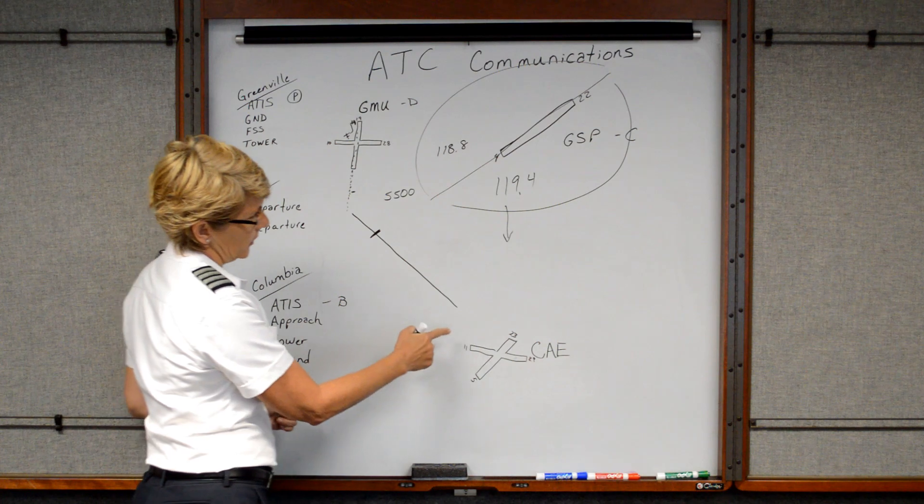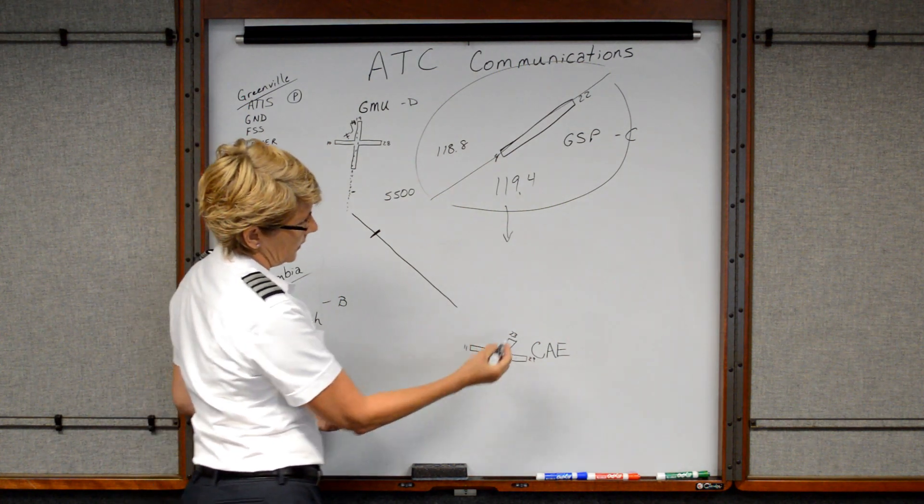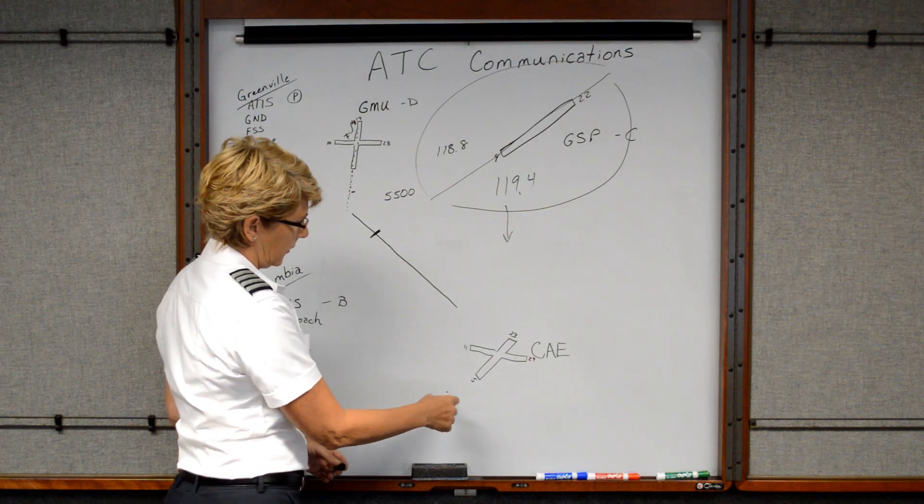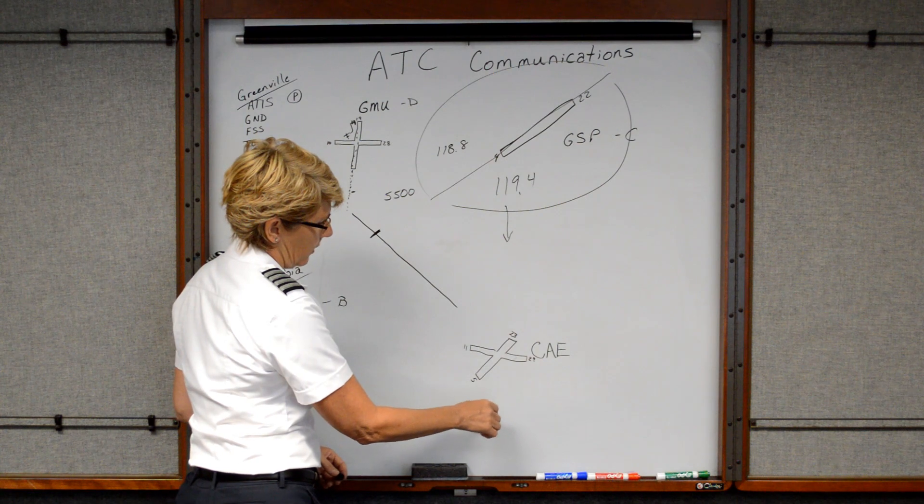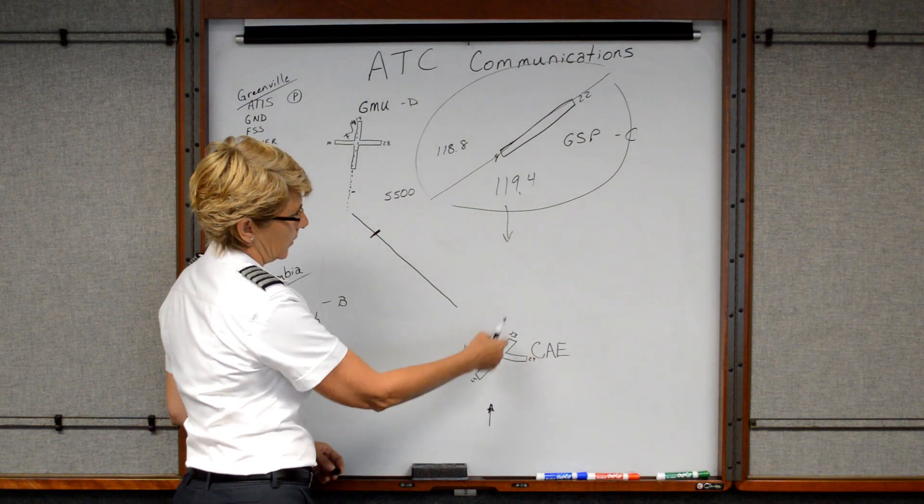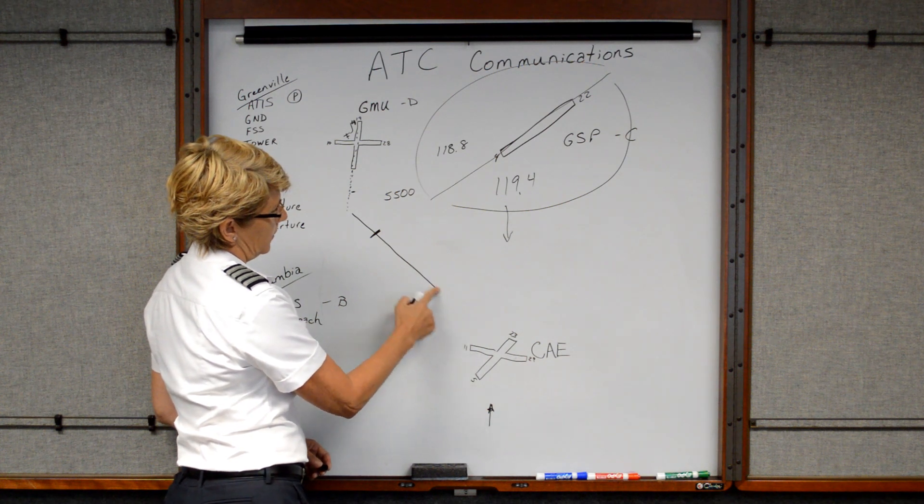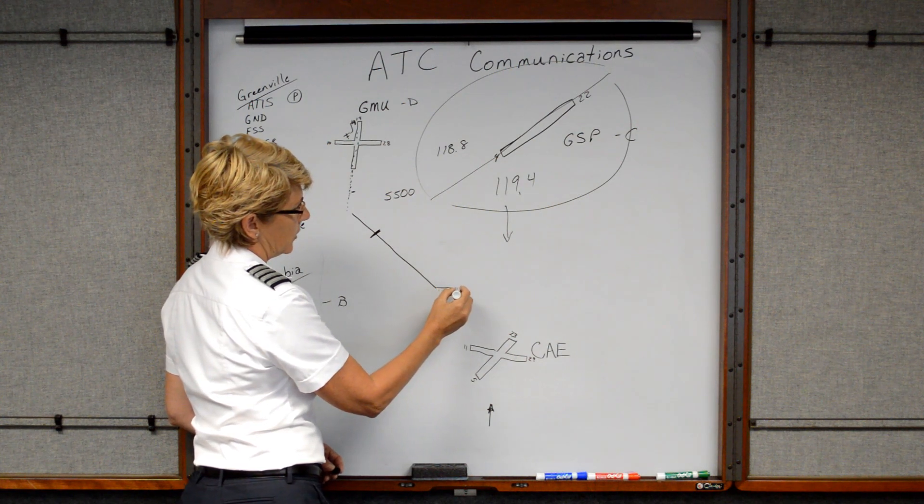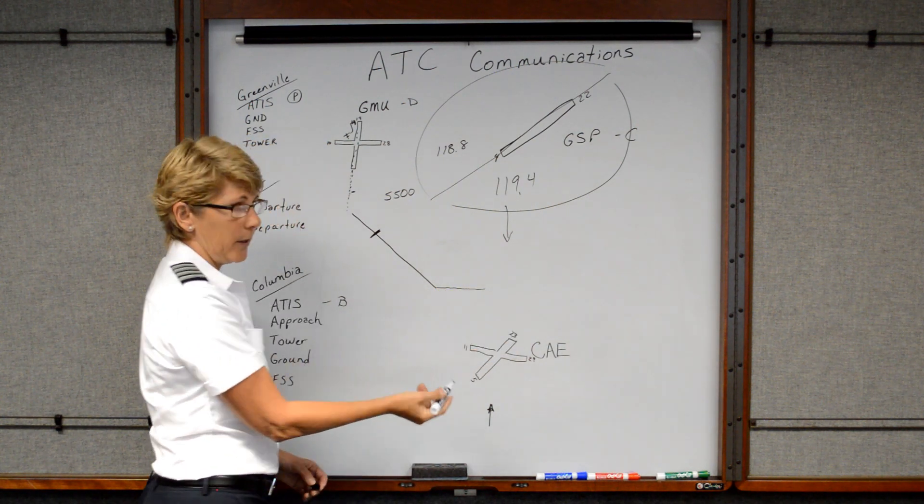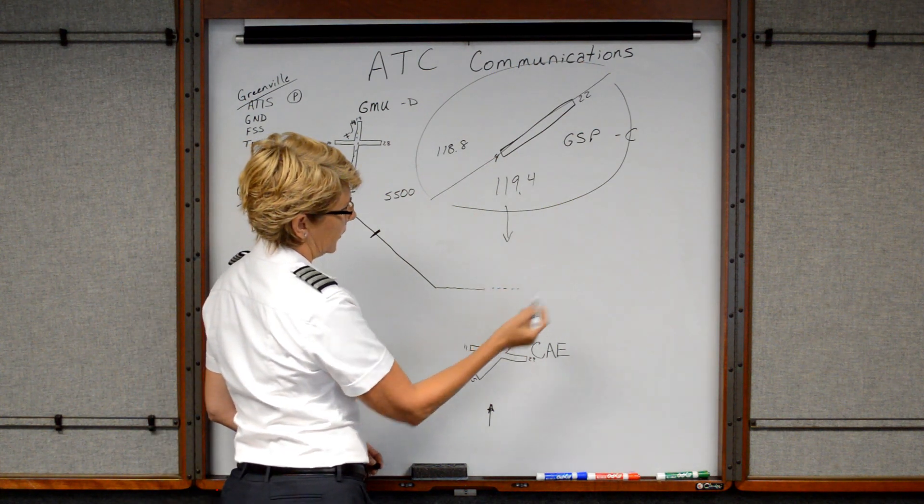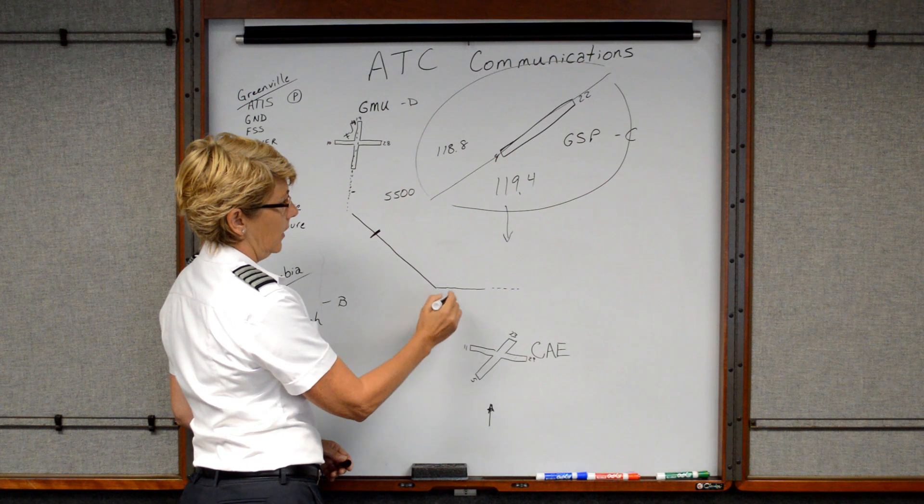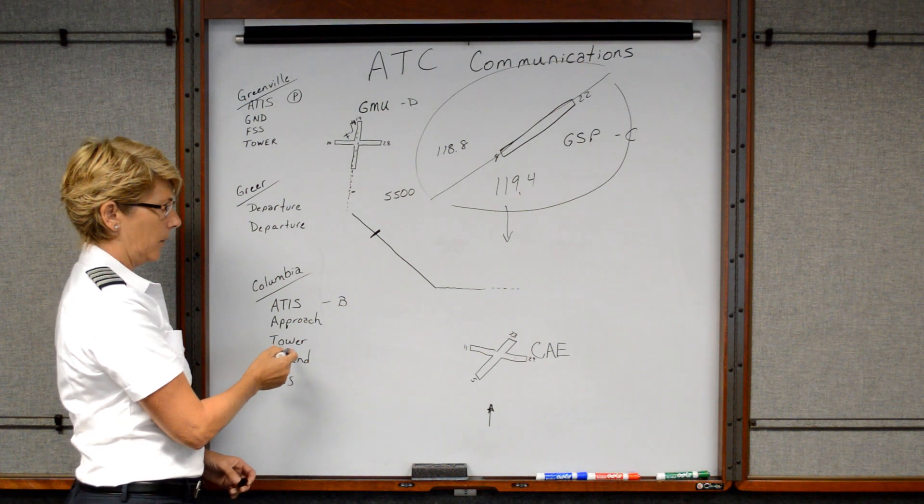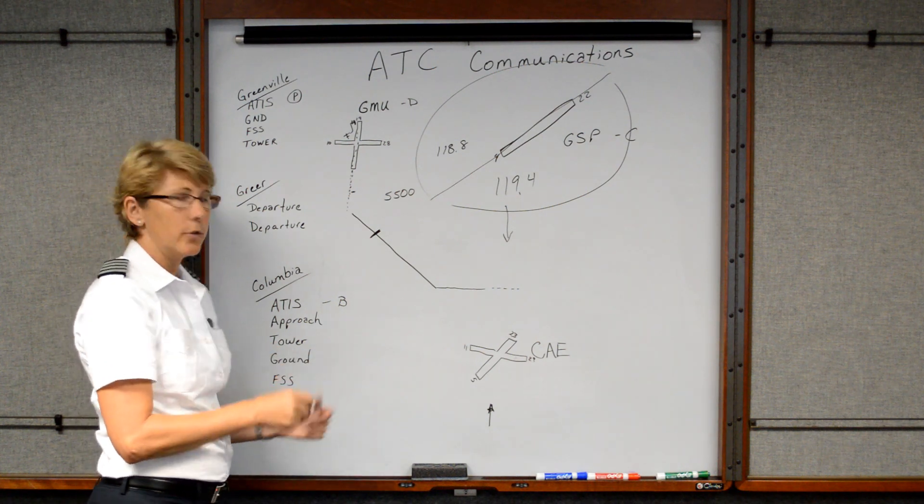All right. The next thing is as you're getting closer into Columbia and maybe this particular day, they're landing runway two, three, because on our flight plan and our weather and everything that we had worked out earlier, the winds were out of the South. So most likely they would be using runway two, three. So Columbia approach may start turning you to a heading. Like they may say, turn left heading zero nine zero, expect the visual for runway two, three, and they may vector you around and then clear you to land, excuse me. They're not going to clear you to land. They just vector you around.